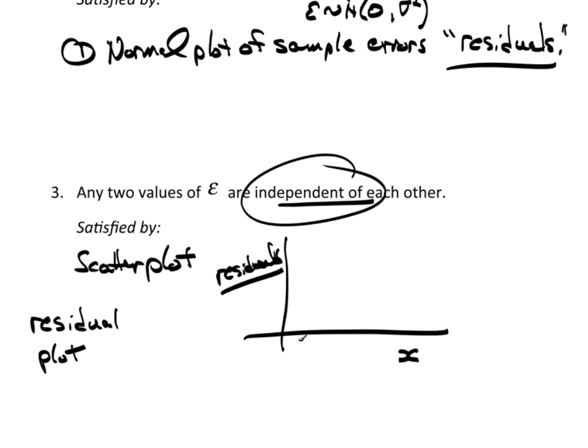And this is very commonly referred to as a residual plot. Now, I'm looking for a couple of things here. Because the mean is zero, it's guaranteed by the least squares regression, what I'm hoping to see is basically a blob with no discernible pattern. That would be good. That means they're independent.